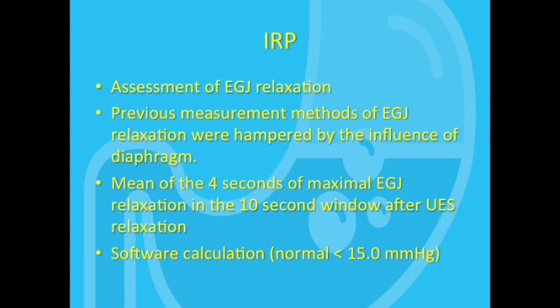We used to simply measure the residual pressure of the EGJ after a wet swallow. How is the IRP better? The problem with simply measuring residual pressure is that it is influenced by the activity of the diaphragm. For example, if someone is breathing rapidly during the study, the increased diaphragmatic pressure exerted will falsely elevate the estimation of residual EGJ pressure.